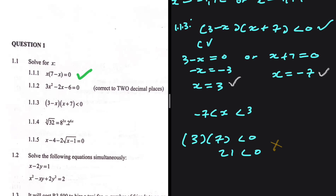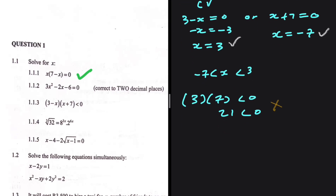So the solution must be outside that range, meaning x needs to be greater than 3 or x needs to be less than negative 7. For these values of x, our inequality is going to hold.